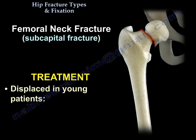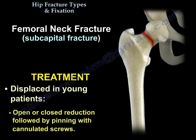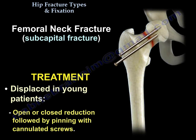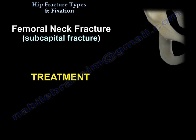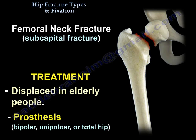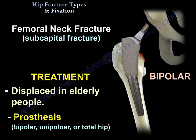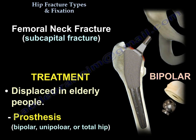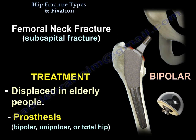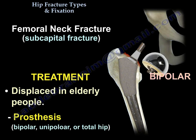If the fracture is displaced in a young patient, you will do reduction — either closed reduction or open reduction — followed by pinning with cannulated screws. However, if displaced in the elderly, you will do a prosthesis: either bipolar, unipolar, or total hip replacement.